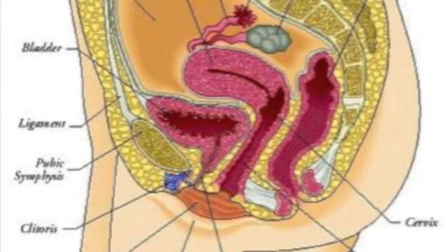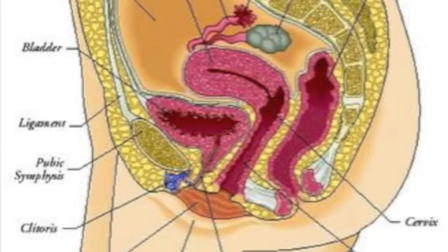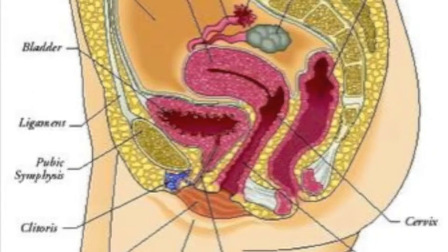The vagina itself is about 7.5 to 10 centimeters in length and is essentially devoid of nerve sensation fibers. The cervix and uterus are considered one organ, though I listed them separately because the cervix is almost a unique organ unto its own.